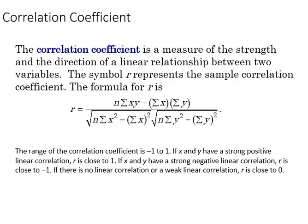A correlation tells us about the strength and direction of the way two variables are related to each other. The correlation coefficient is represented by the letter R, and is found through this equation.